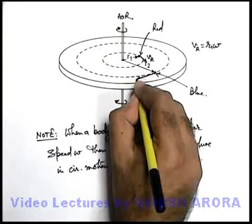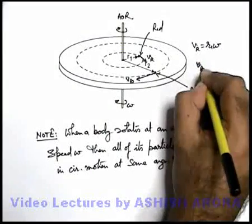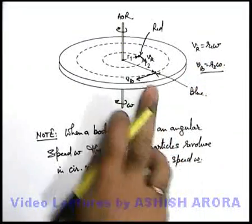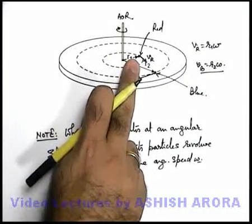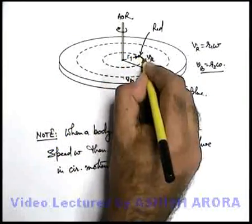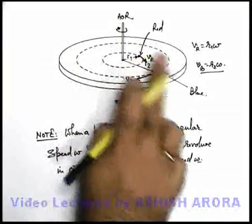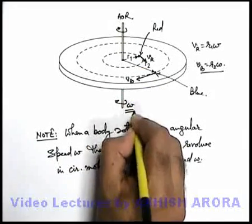Similarly, this blue spot will be tangentially having a speed v_b, and this v_b can be written as r2ω. So we can say the linear speed of the blue spot is more than the linear speed of this red spot, although they are revolving in such a manner that they will complete the circle in the same time, because their angular speed is the same.